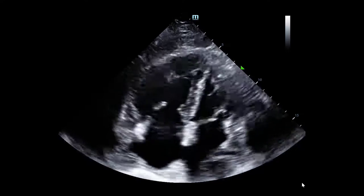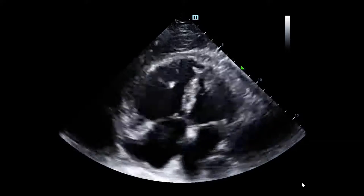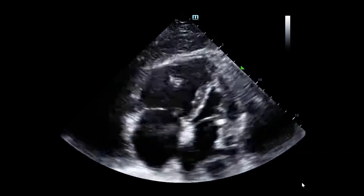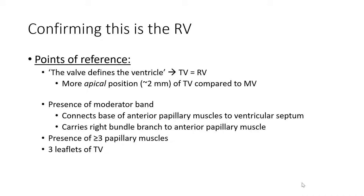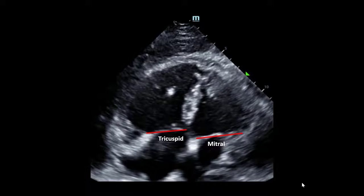Here we are with the apical 4-chamber view. Right off the bat, one of the major findings is an enlarged right ventricle. We asked ourselves: is our probe in the right position? Is what we think is the right ventricle truly the RV? Our key learning point is that the valve defines the ventricle — specifically, the more apical position of the tricuspid valve compared to the mitral valve. Secondary supporting criteria include the presence of a moderator band, three or more papillary muscles, or three leaflets of the tricuspid valve. The apical tricuspid valve position, marked out here based on each valve, is a very telling feature confirming you are truly at the right ventricle.